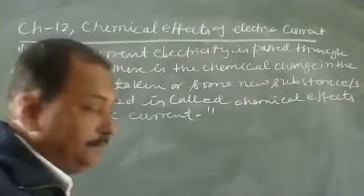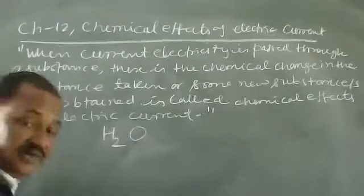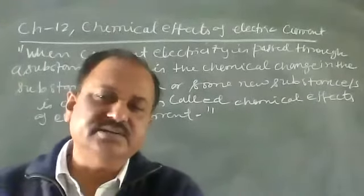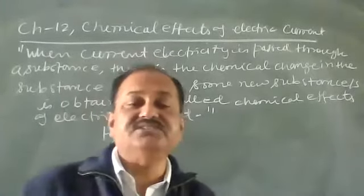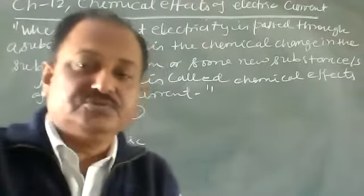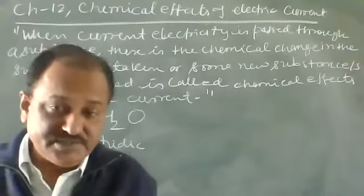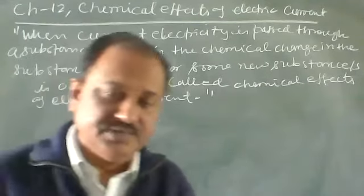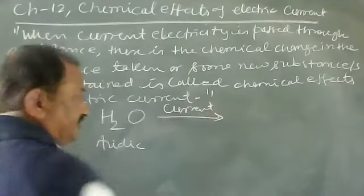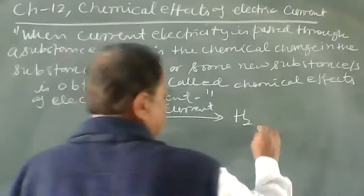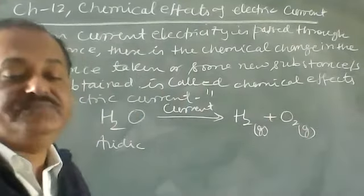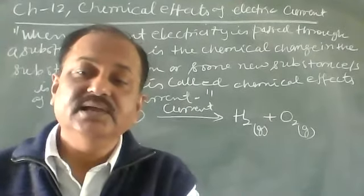For example, take water. This water is acidic, meaning a little amount of acid has been added. Acid makes water a conductor, because current cannot be passed through pure water. So we have to mix a little amount of acid or base to make water a conductor. When current is passed through this acidic water, this is called chemical effects of electric current.